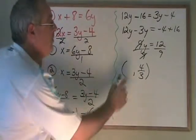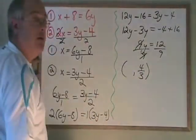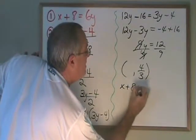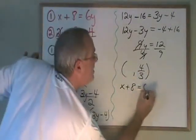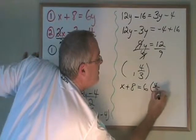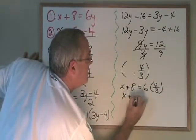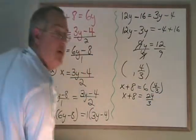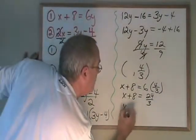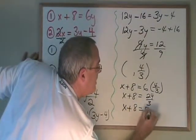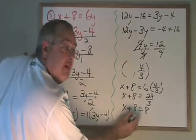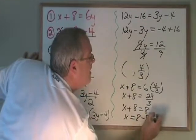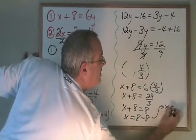Let's find our x by plugging y equals 4 thirds into one of the original equations. I'll use equation 1. x plus 8 is equal to 6 times 4 thirds. x plus 8 is equal to 24 thirds. 24 thirds is 8. So we have x plus 8 equals 8. Moving this 8 from the left to the right of the equals, we have x equals 8 minus 8. x equals 0.